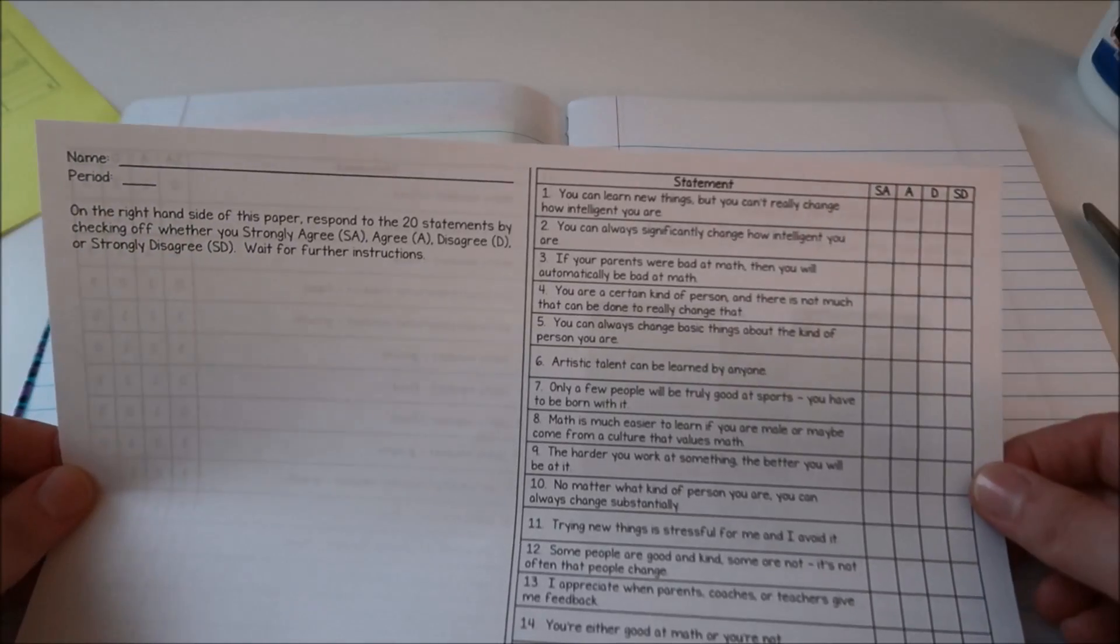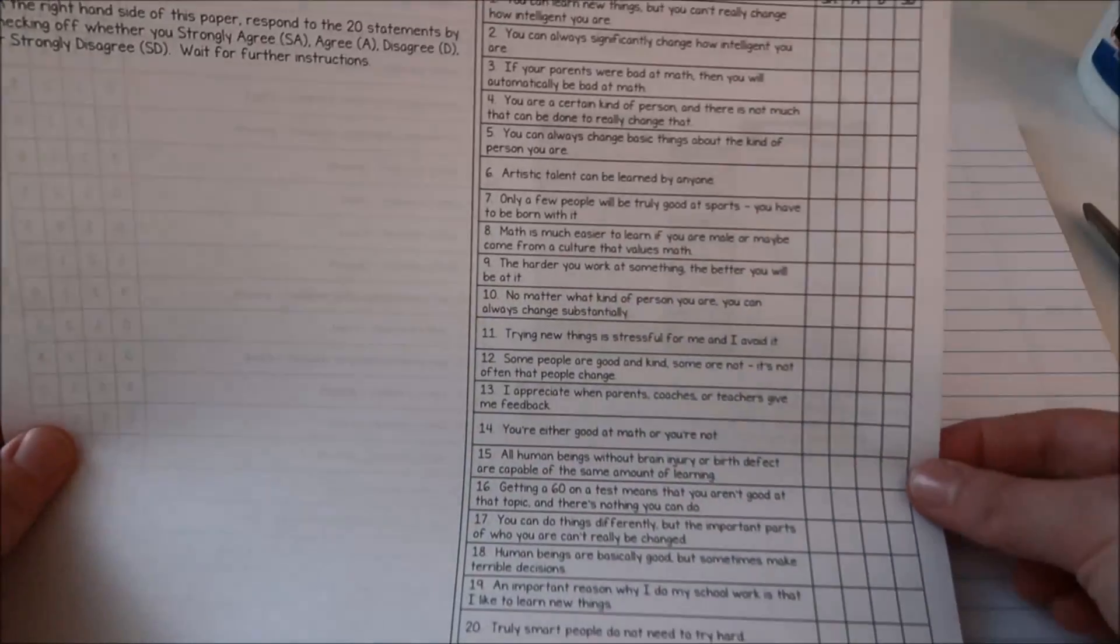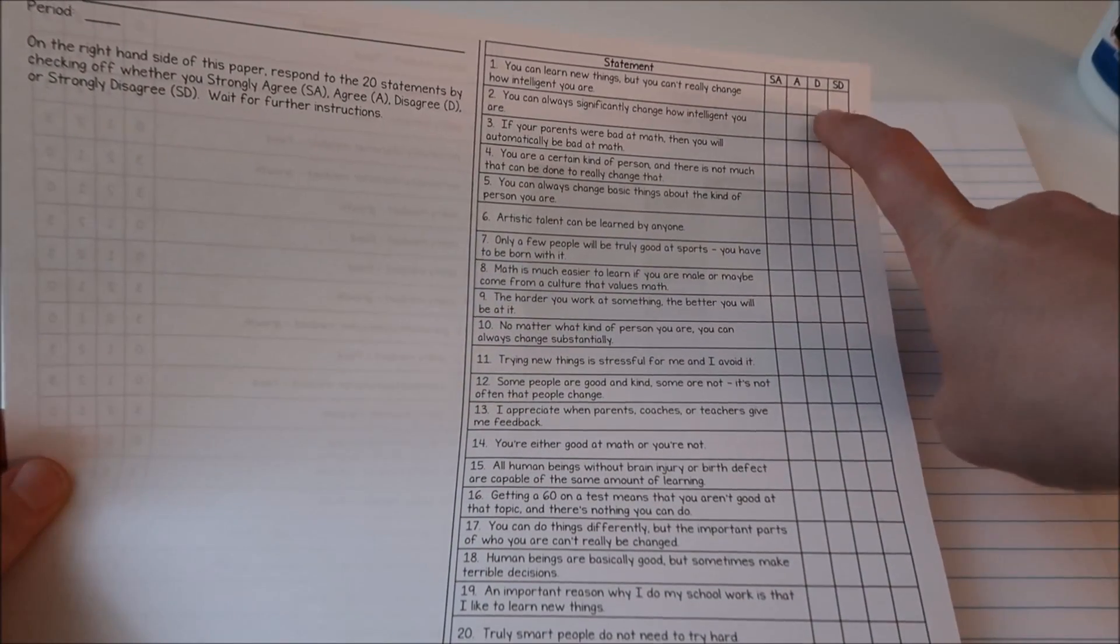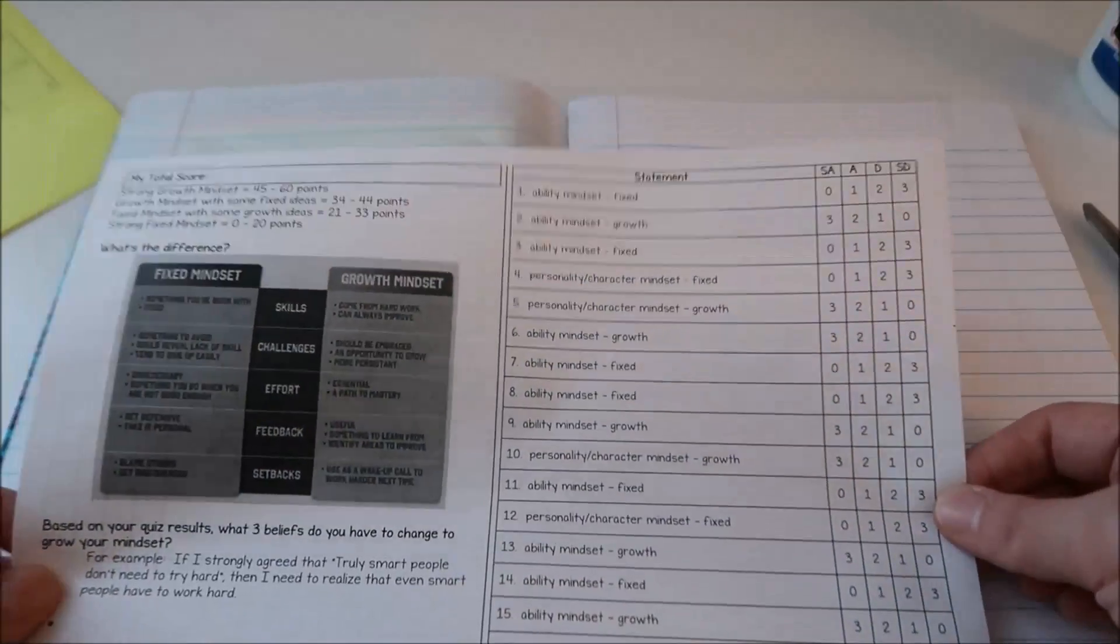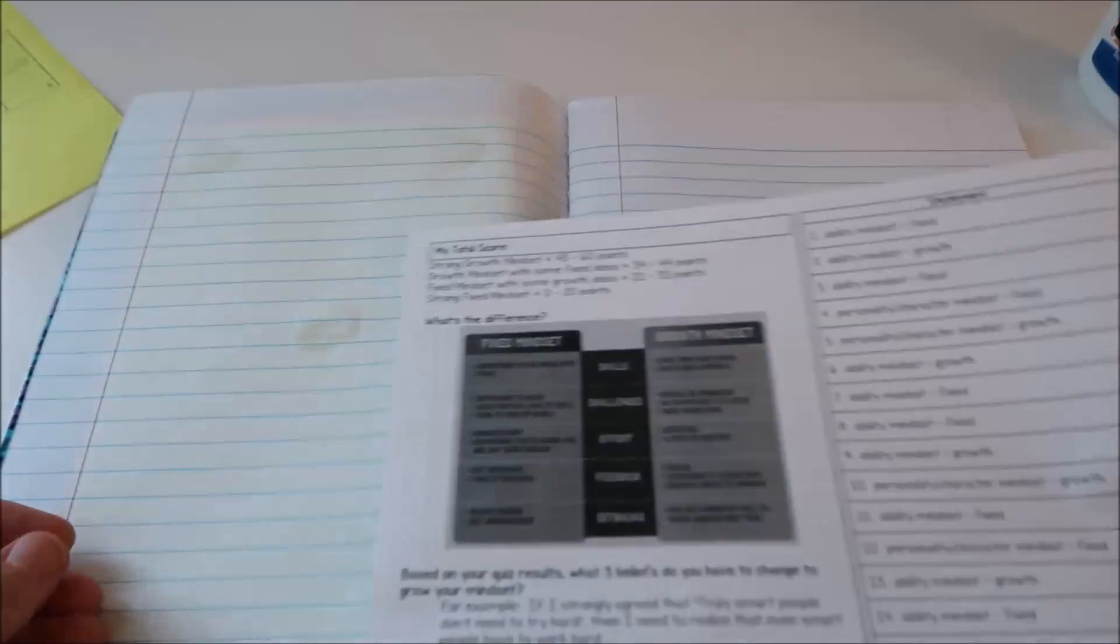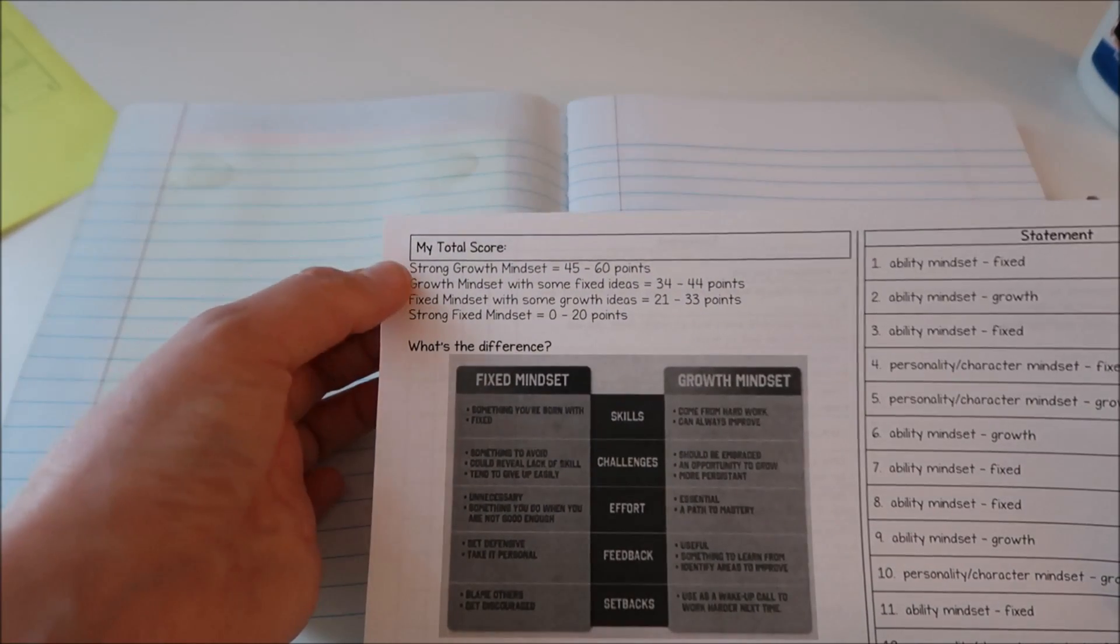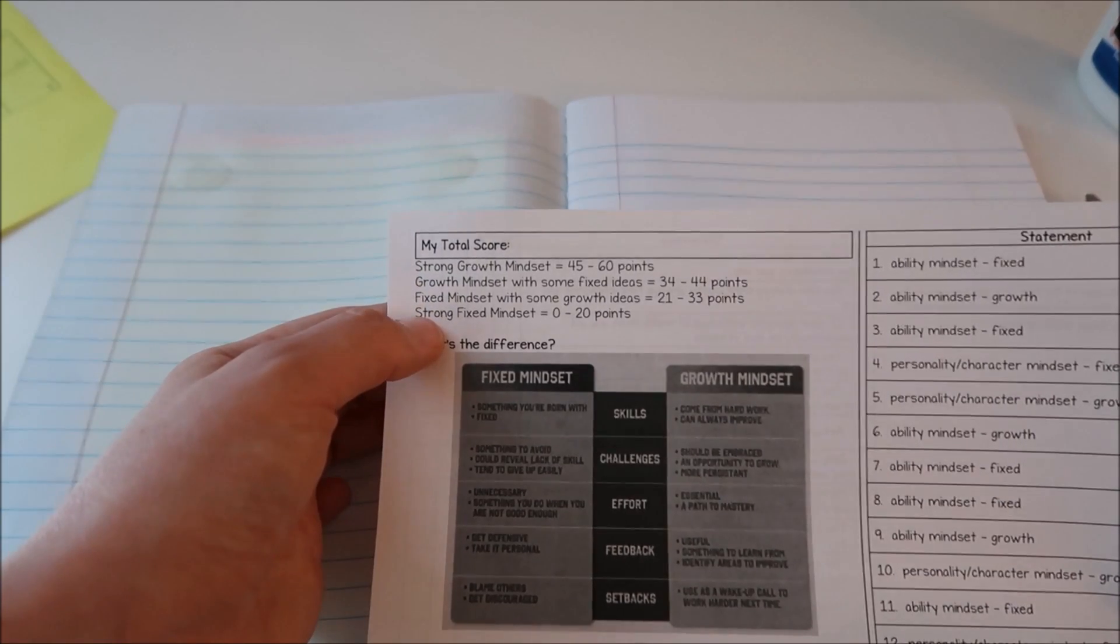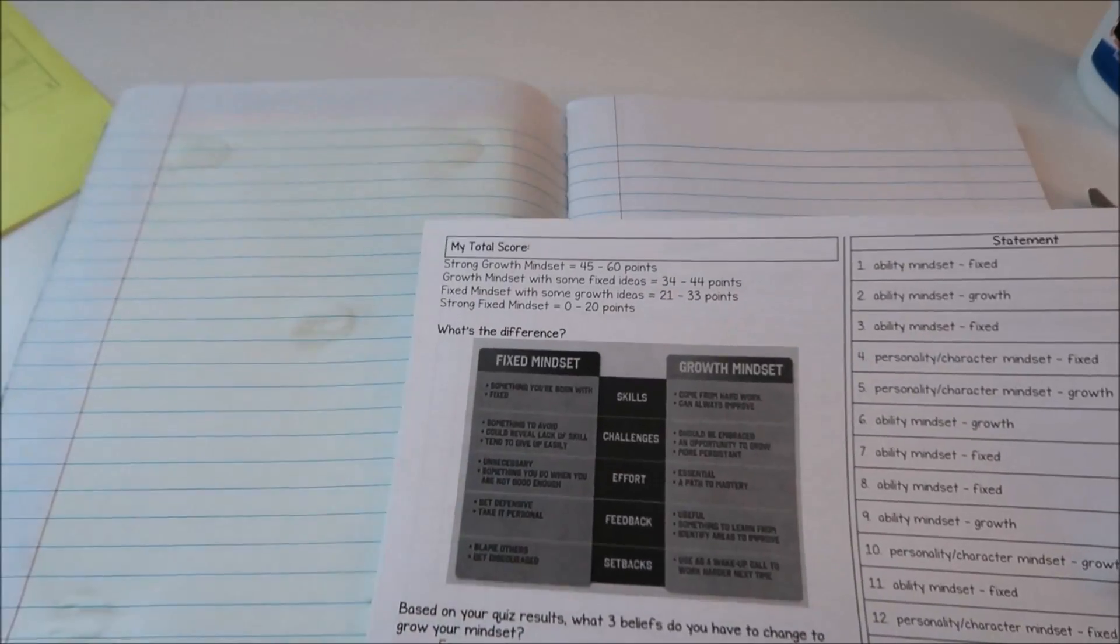My next page is going to be this survey that I give my students. It has 20 statements about growth mindset especially related to math for students to strongly agree, agree, disagree or strongly disagree with. When they flip it over to the back they get a score for their responses. They get to total them up and then over here will tell them about their mindset score. If they get a 45 to 60 they have a strong growth mindset and then 0 to 20 indicates a strong fixed mindset. There's just some information for them about growth and fixed mindsets.